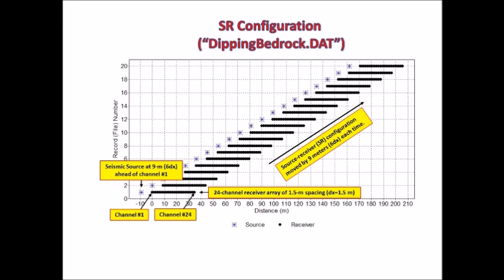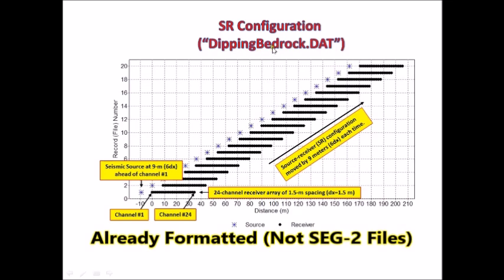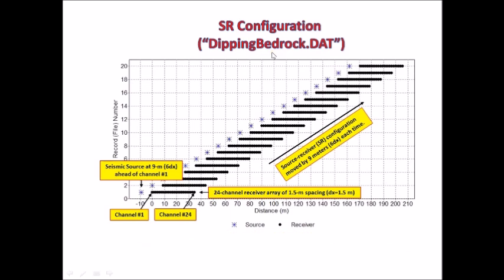This chart shows how that sample dataset called DippingBedrock.DAT was generated. There were originally total 20 field files or field records generated. But all of them were formatted and combined together to make this one file. So whenever you import this dataset, you have to choose formatted seismic data, not SAG2 seismic data.